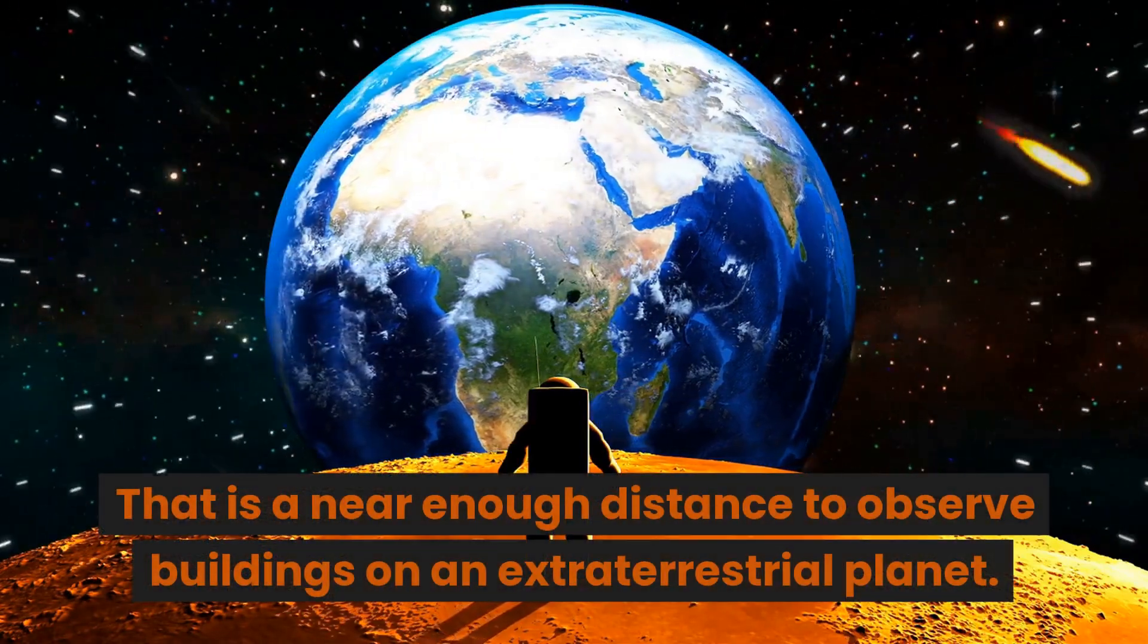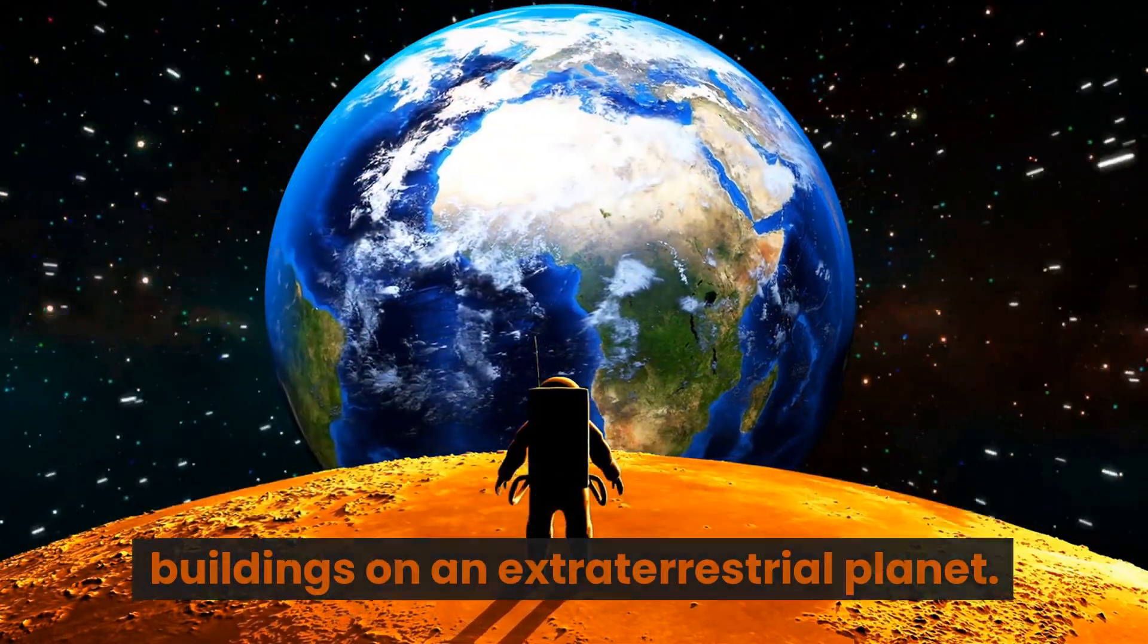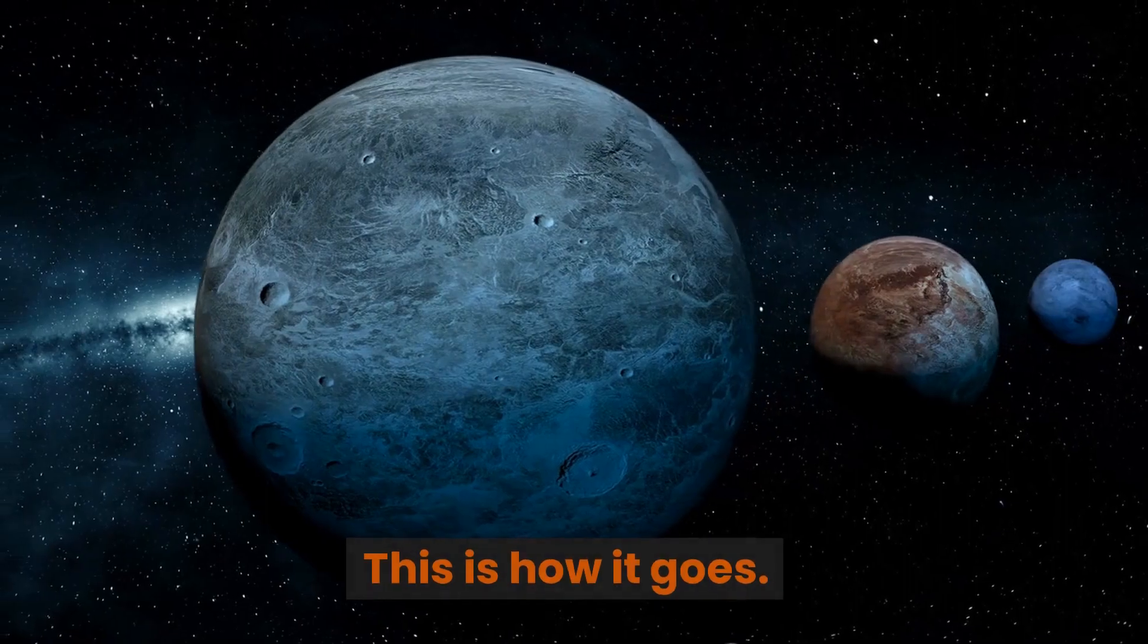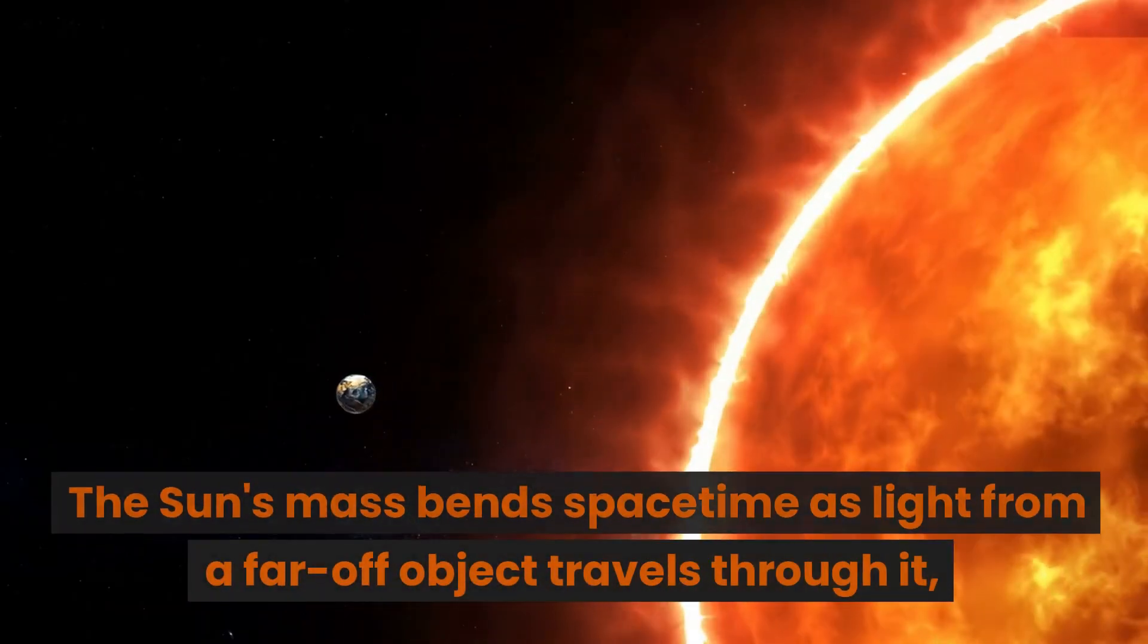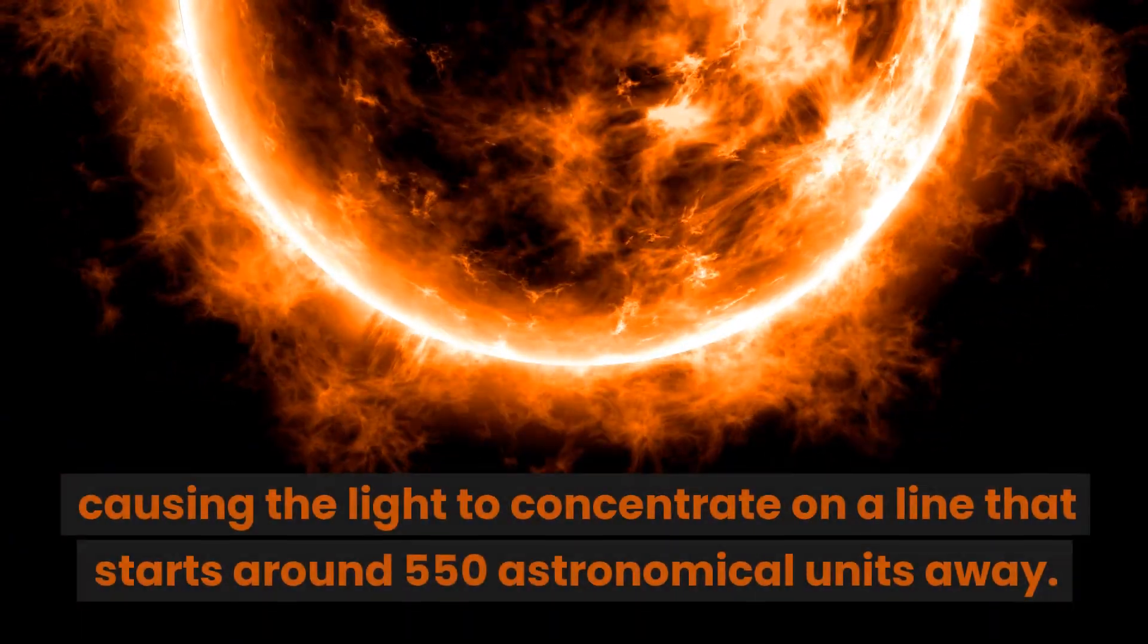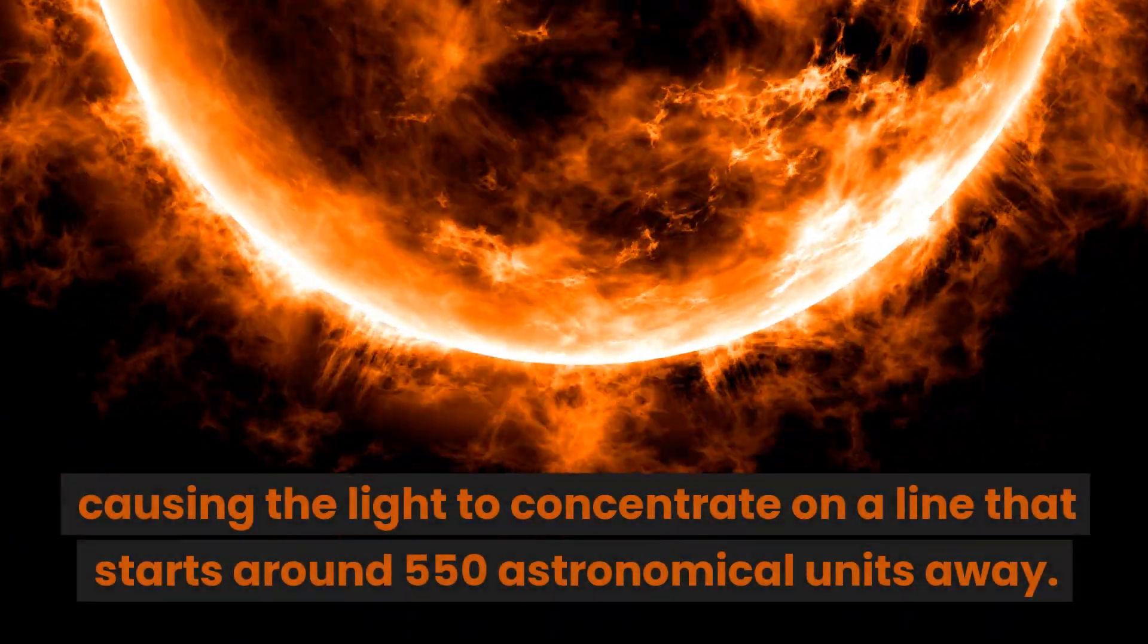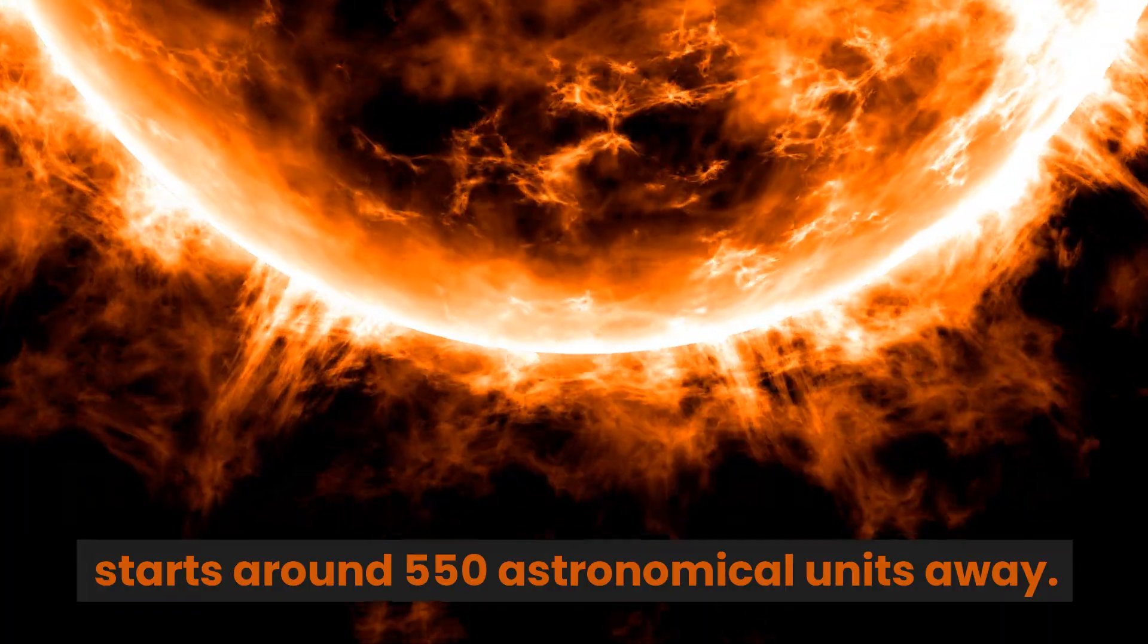That is a near enough distance to observe buildings on an extraterrestrial planet. This is how it goes. The sun's mass bends spacetime as light from a far-off object travels through it, causing the light to concentrate on a line that starts around 550 astronomical units away.